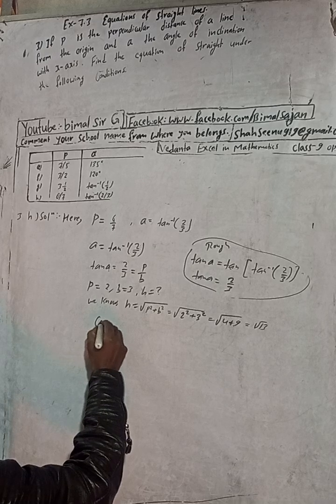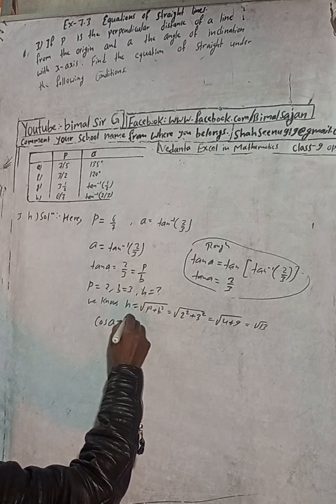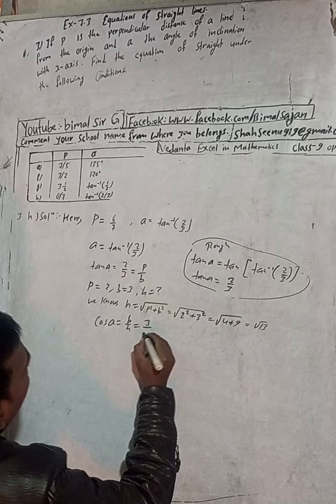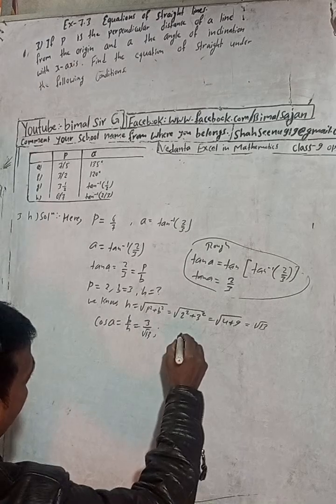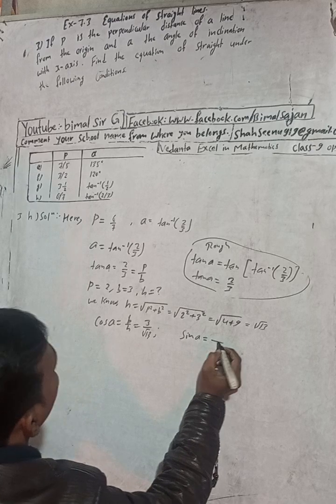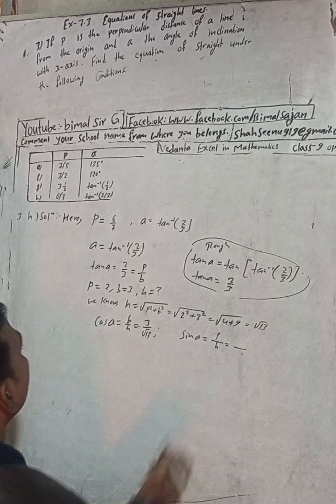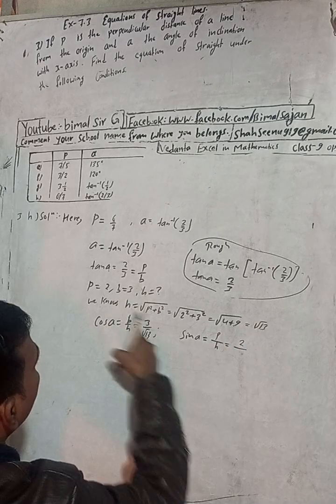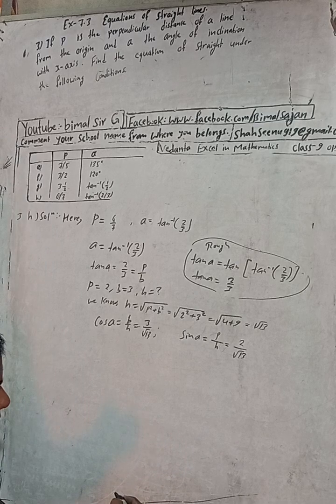Therefore our cos alpha value is b by h, and b means 3 and h means root 13. In the same way, sin alpha is equal to, we can write p by h. So what is p here? P is here 2, and h value is here root 13.